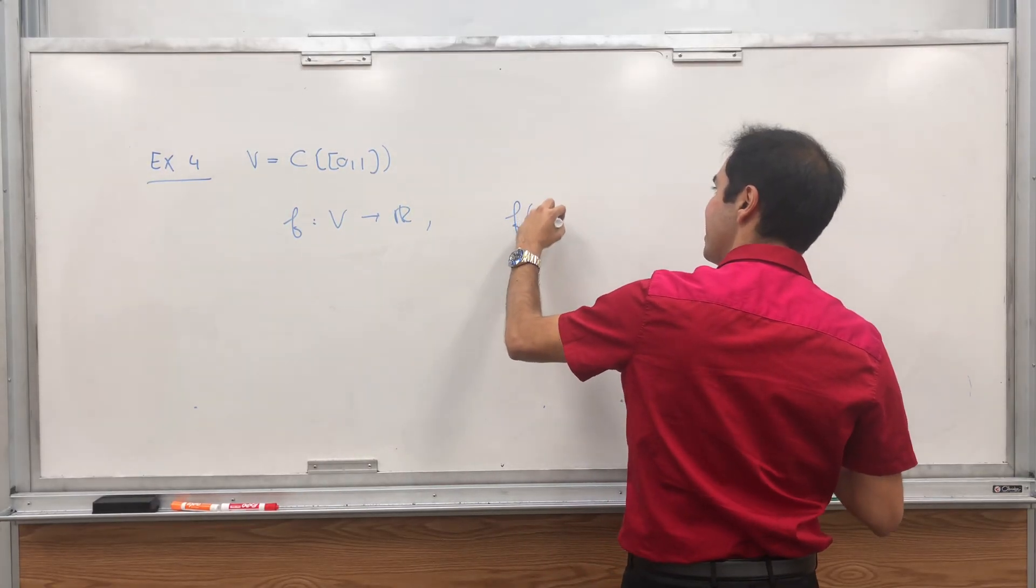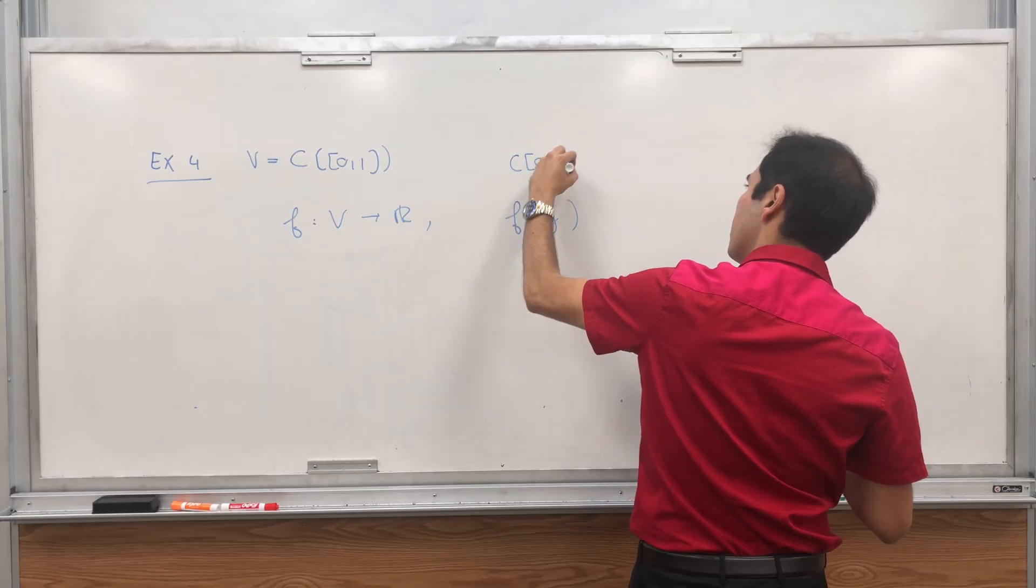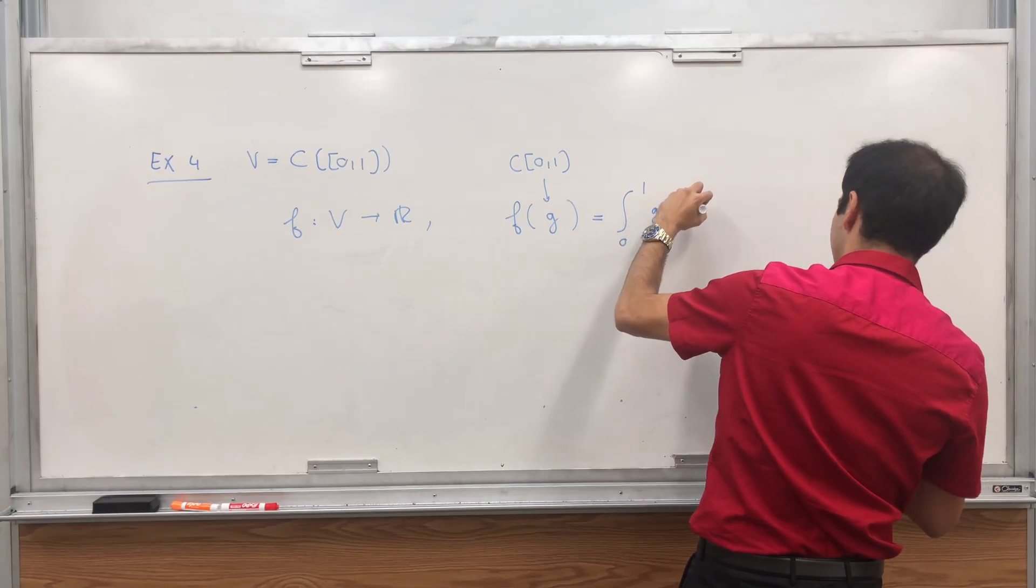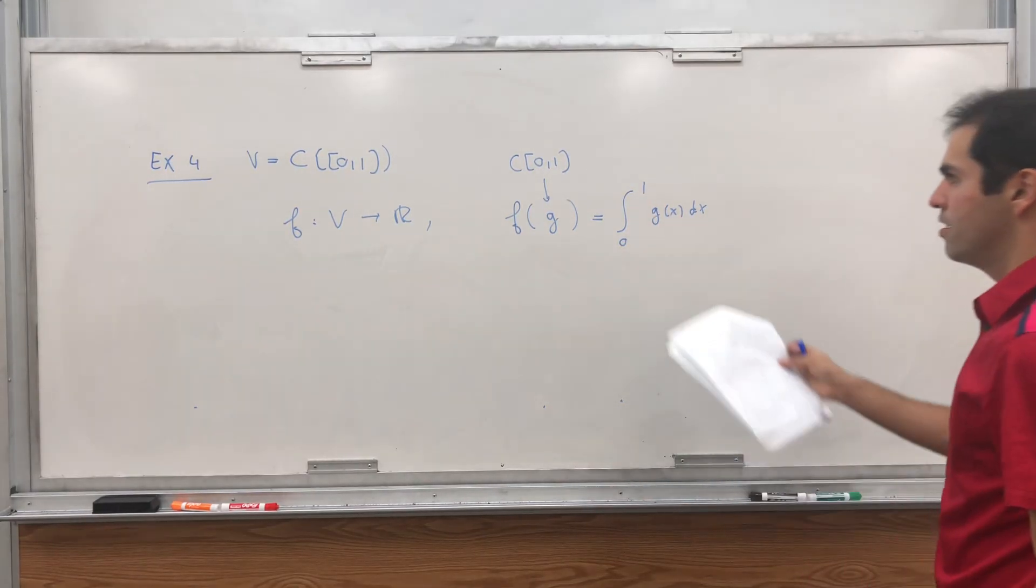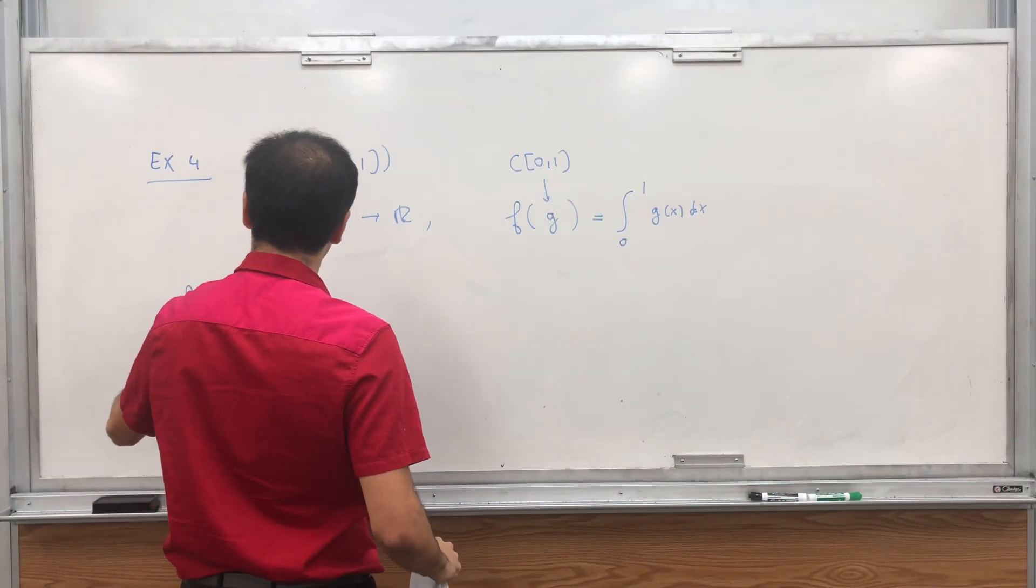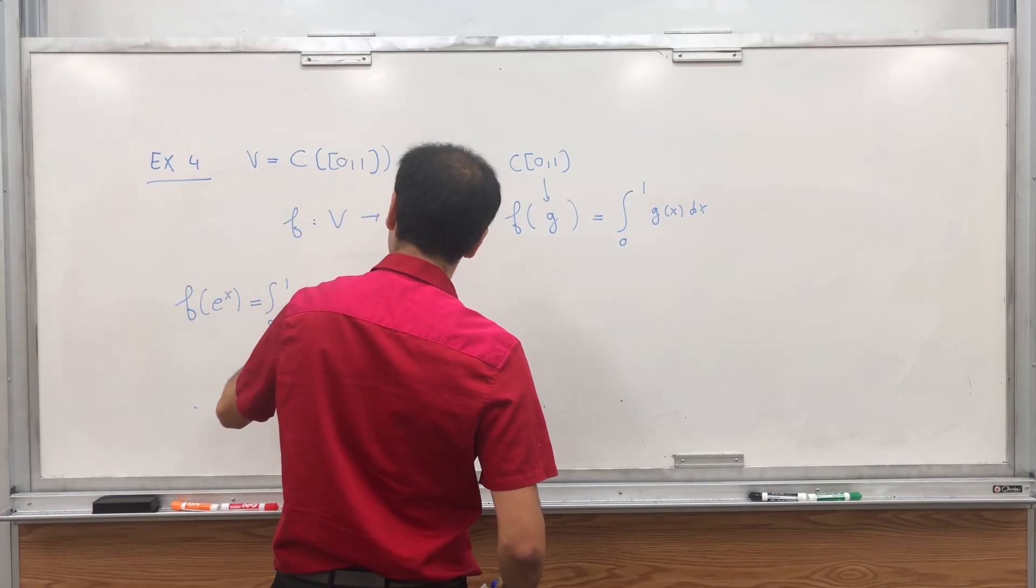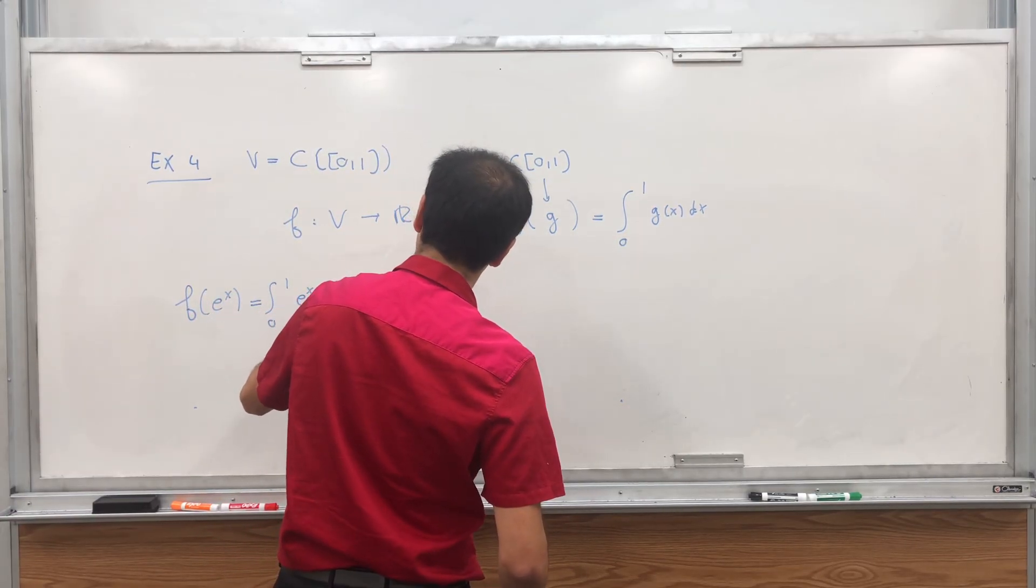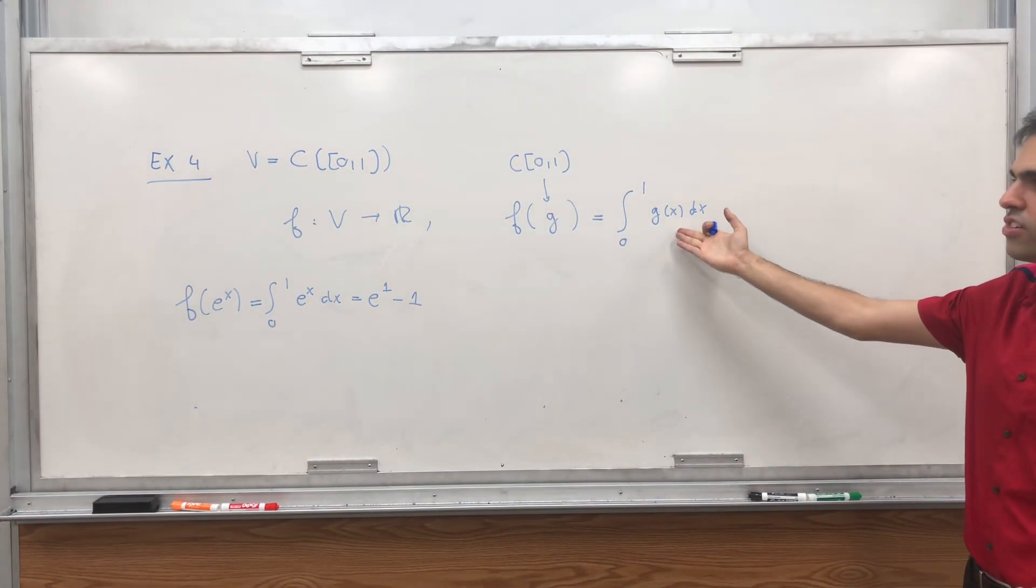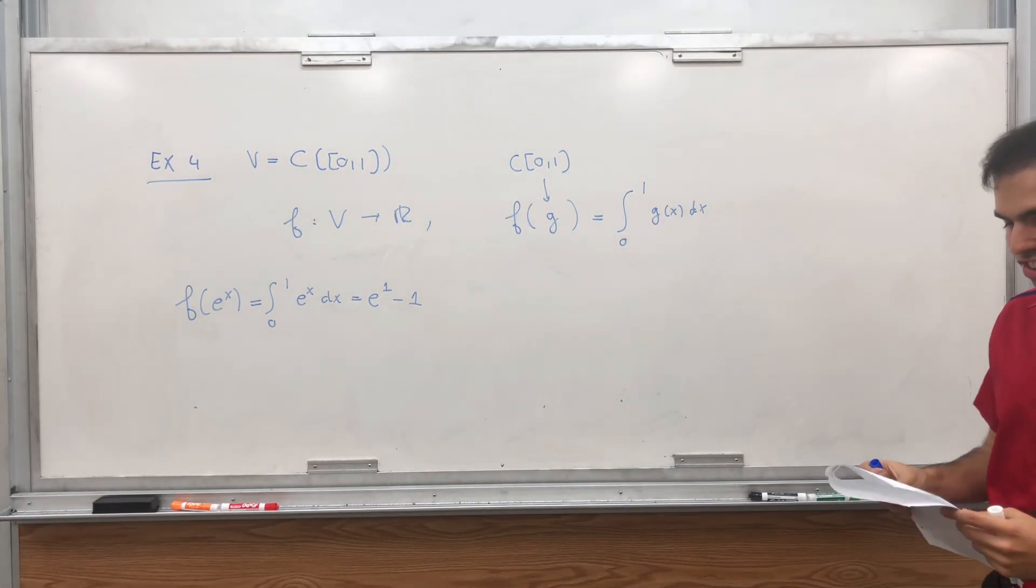And define F from V to R to simply be, so again, the inputs are functions, so continuous functions. And what F does is just integrates G, integral of G of x dx. For example, let's see what F does to the function e to the x. That's integral from 0 to 1 of e to the x dx. And that's e to the 1 minus e to the 0, which is 1. So indeed, you can check it's a linear transformation and the outputs are in your field. So it is a linear functional.